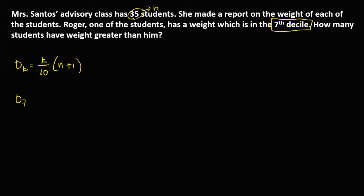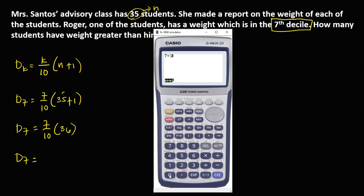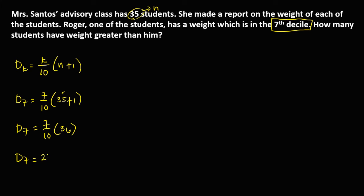To solve for the position of Roger, this is 7 over 10 times 35 plus 1. So this is 36. So d7 equals, we have 7 divided by 10 times 36, that's 25.2.